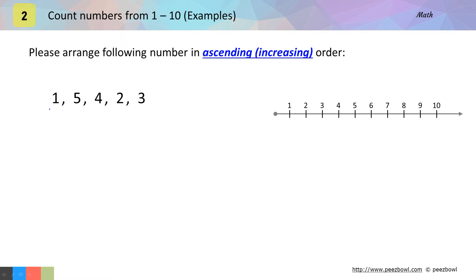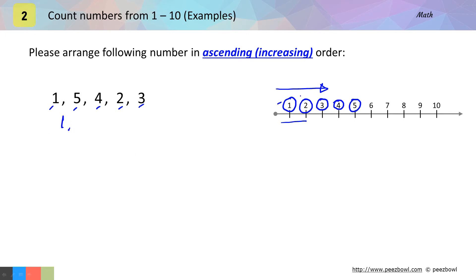First we have one, after that we have five, then we have four, then two, and after that we have three. Now it is very simple — you need to write all the highlighted numbers as they appear on the number scale from left to right. So numbers in ascending order will be one, two, three, four, and five.